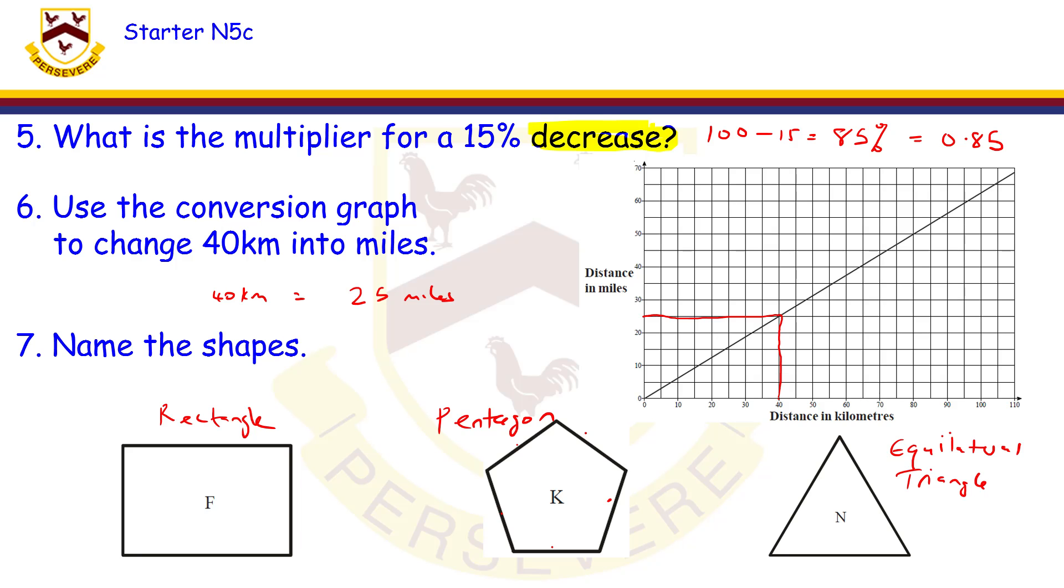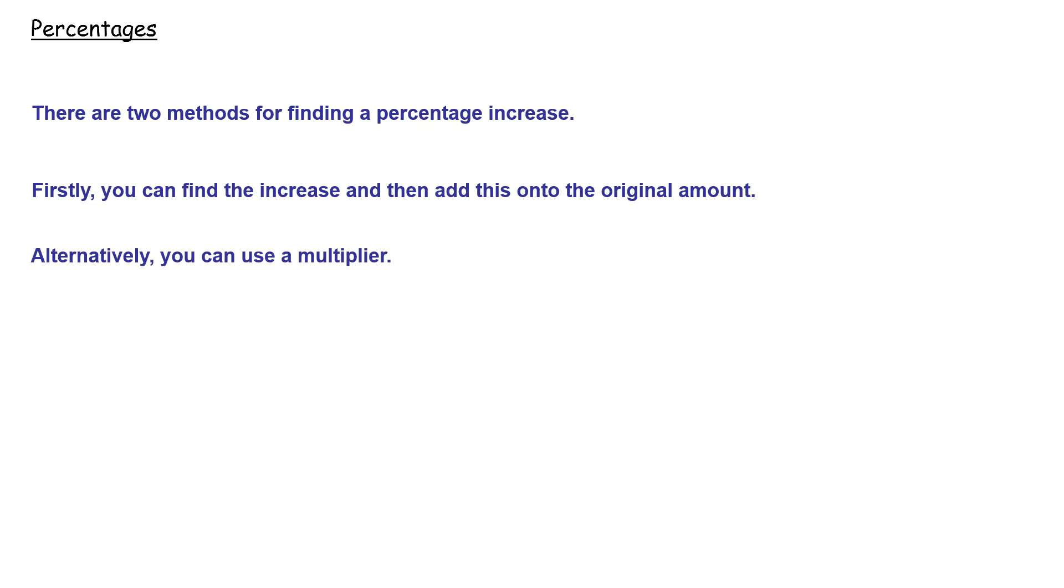So percentages, there are two ways of finding a percentage increase. First way is one we've been doing for a long time - you find the increase and then you add it to the amount you started with. The second way we've done before is to find a multiplier and apply it. You can use both ways. We're going to look at both of them, both for increase and decrease.